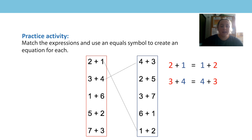One add six would match to six add one. Both expressions have a one and a six in them. In the first expression in the red box, the one comes first and the six comes second, whereas in the second expression in the blue box, the six comes first and the one comes second. However, the sum of both expressions is seven, so we can use an equal sign between them.